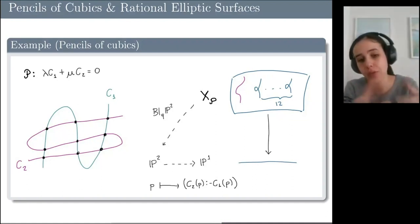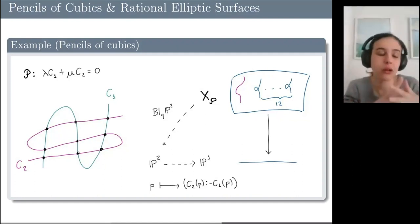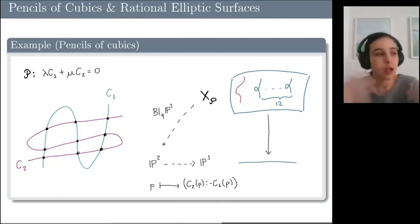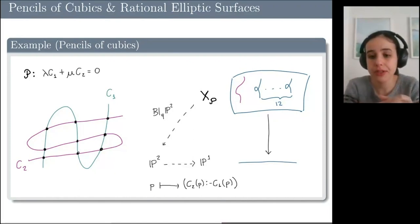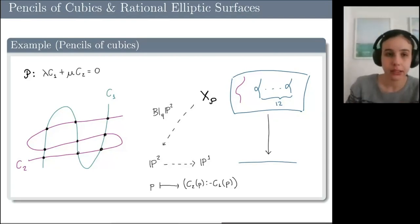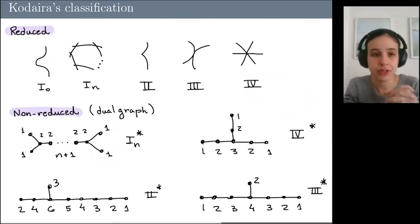Generically in the surface we're going to have 12 singular fibers, which are nodal ones, as I illustrate in the picture. But if one starts with a more degenerate pencil — for instance, if the pencil has a triple line as one of its members — then we get other types of singular fibers. The possibilities for singular fibers are well understood and have been classified by Kodaira.